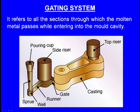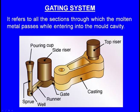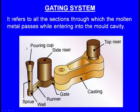This is the gating system — this is the pouring cup. We pour the molten metal through the pouring cup, then the molten metal flows into the sprue, the vertical passage, then it falls into the sprue well, then it passes through the runner, the horizontal passage, then it passes through the gate. Here there is a side riser, this is the casting cavity, the mould cavity, and this is the top riser.